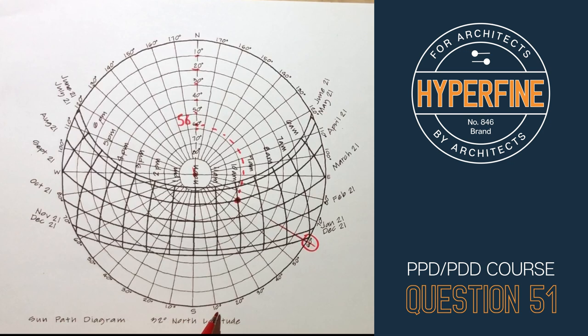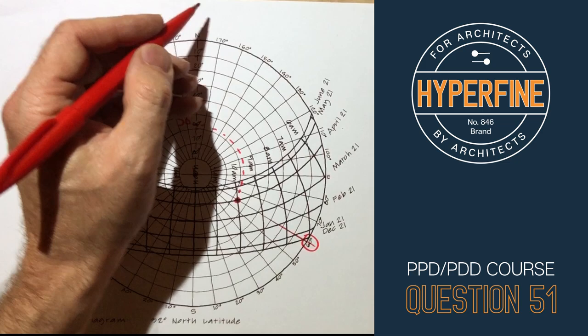So what this is saying, if you look at the numbers, they're going up from south. So this is reporting the azimuth in degrees east of south, and degrees west of south, and I've never seen it reported that way before.